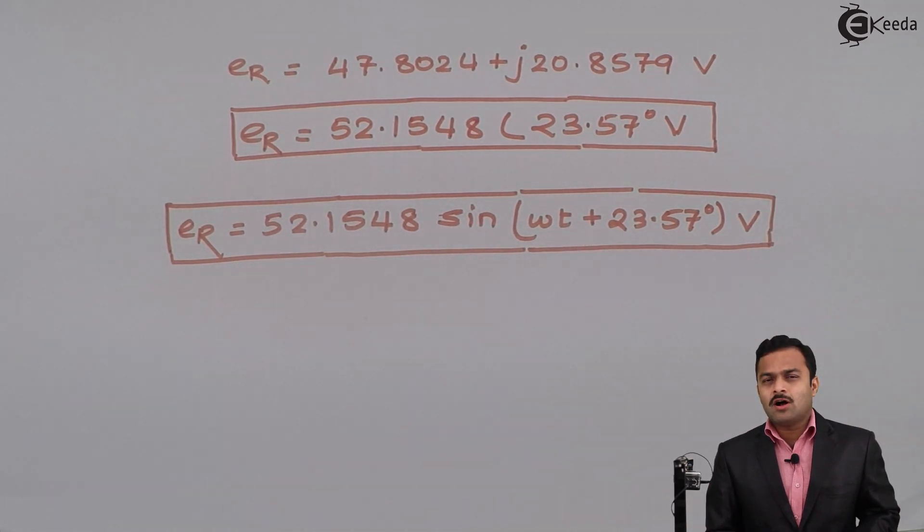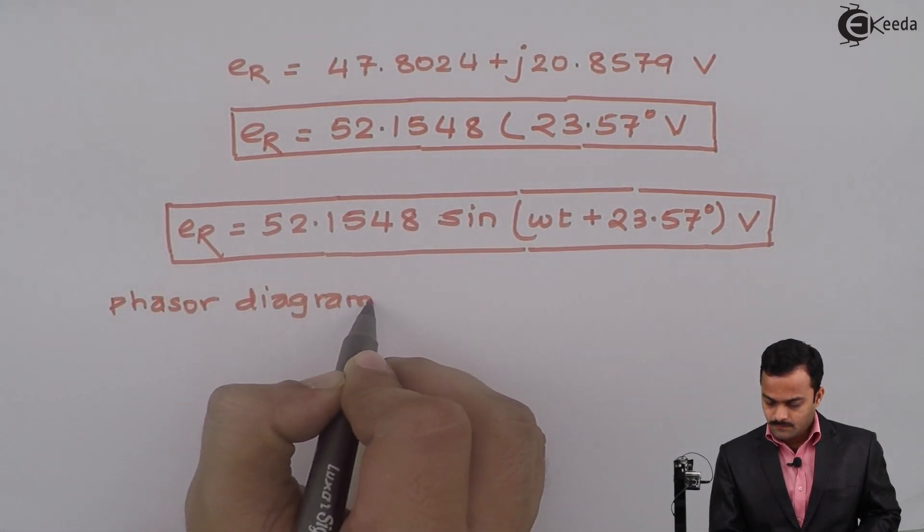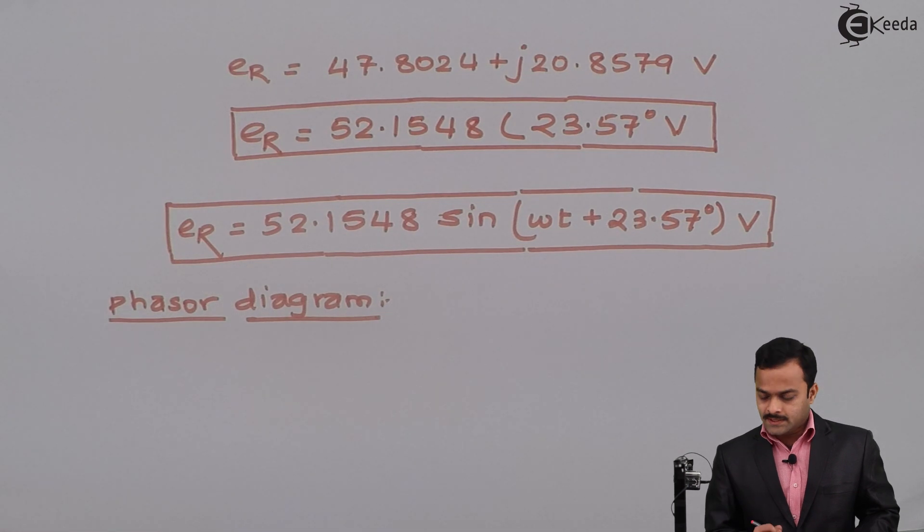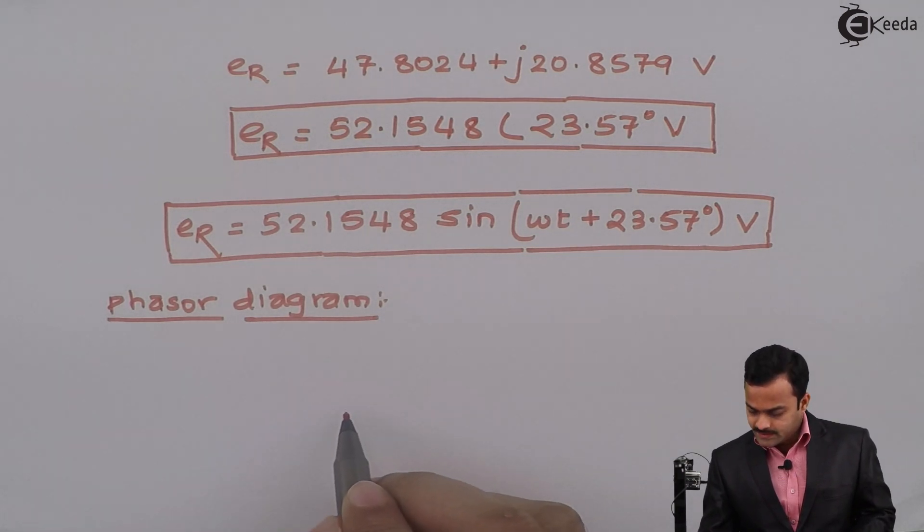Let's represent all the quantities in a phasor diagram. So let's represent the first quantity: E1 is given as 25 at an angle 0 degrees, so the phase angle is 0 and having a magnitude 25, so it will be like this along the positive x-axis.